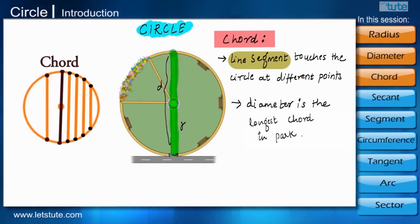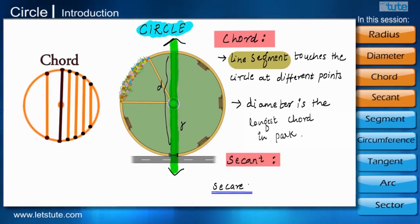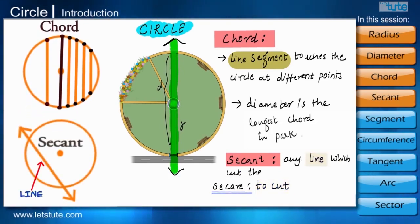Now if the same road extends on both the sides outside the park, then that road can be called as a secant of the park. Secant in Latin means to cut and hence any line which cuts the circle is called as a secant.